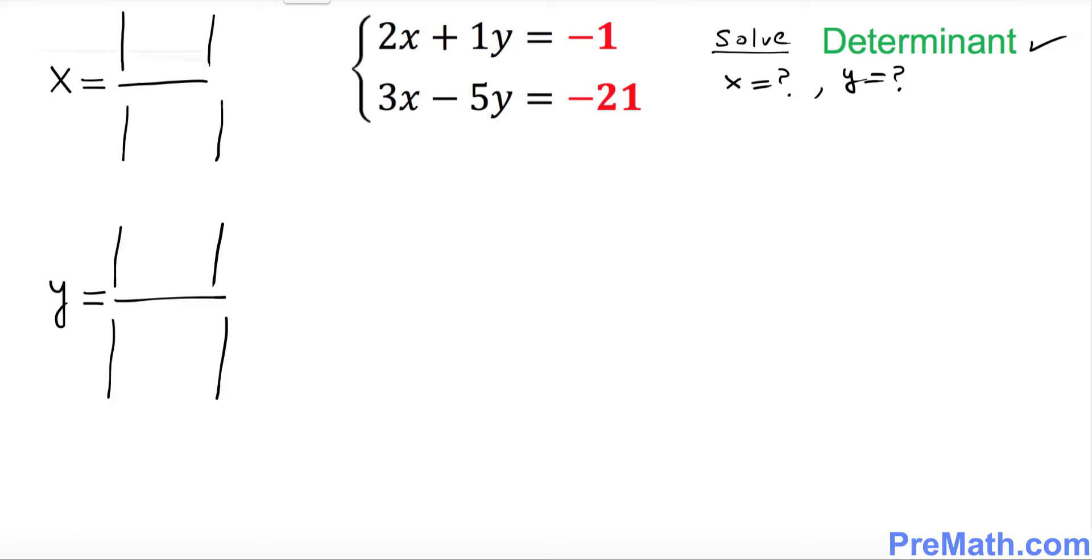Now next step I want you to just go see over here. We want to fill out these determinants or these boxes. Look at these coefficients on the left hand side: 2, 1, 3 and negative 5. Whatever these numbers are I want you to put in the bottom determinants in the same order. So you're going to have 2, 1, 3, negative 5. Same numbers on the next bottom.